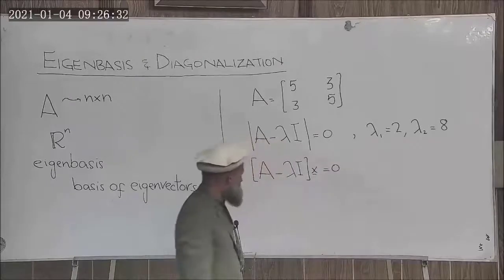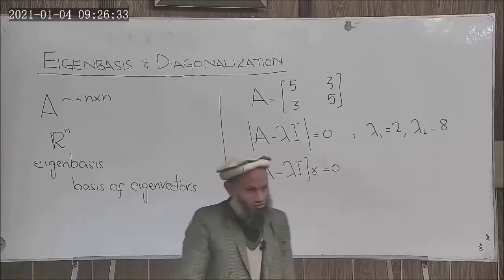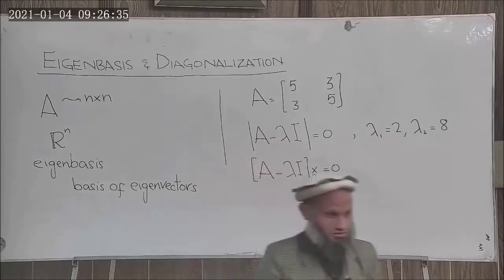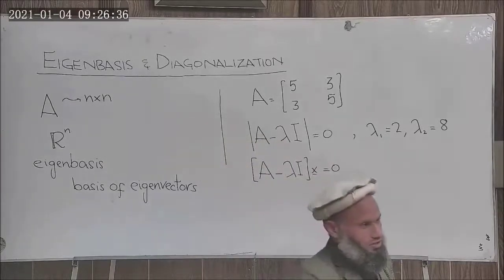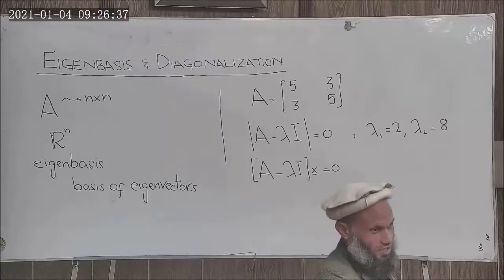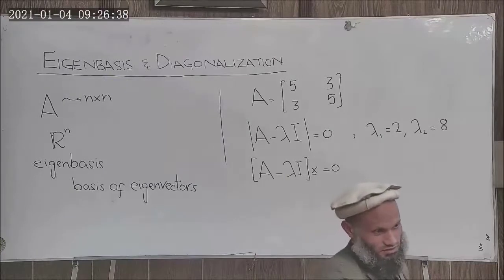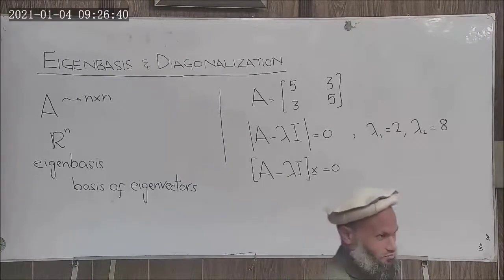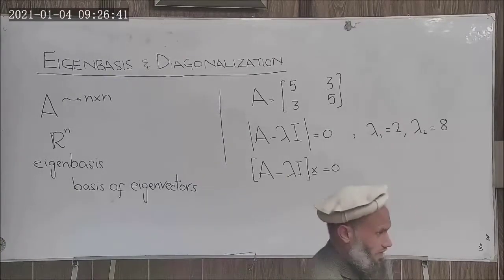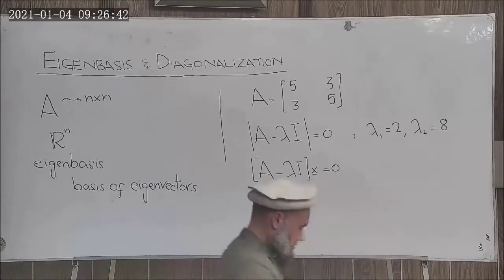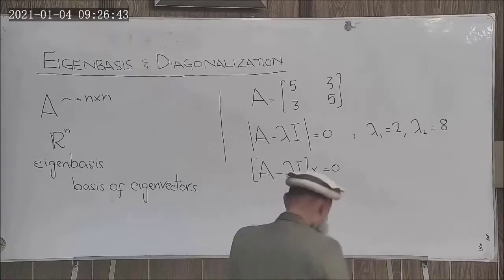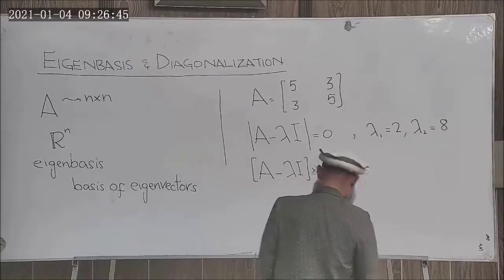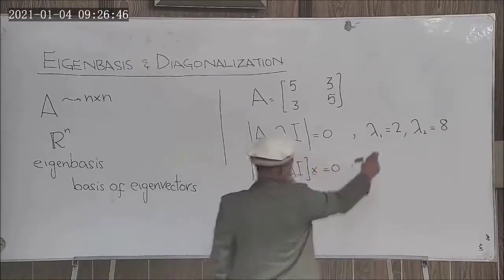Eigenvectors are basically the non-trivial solution to the system of equations (A minus lambda I) times x equals zero. To solve this system, you construct the augmented matrix, reduce it into echelon form, perform back substitution, and then you find the eigenvectors.